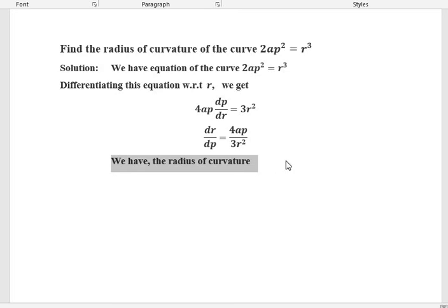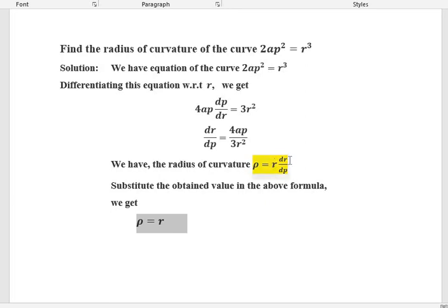We have the radius of curvature formula, that is ρ = r(dr/dρ). Now, in this equation, let us substitute the dr/dρ value. Then we get ρ = r into dr/dρ value is 4aρ/3r². So, let us substitute that.